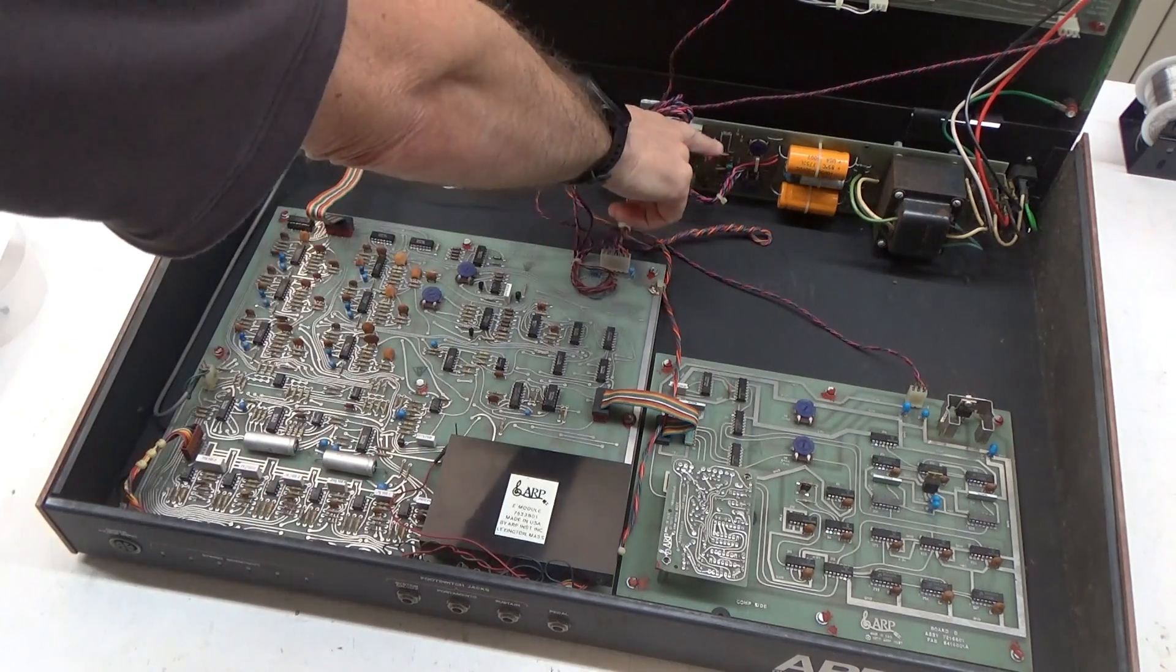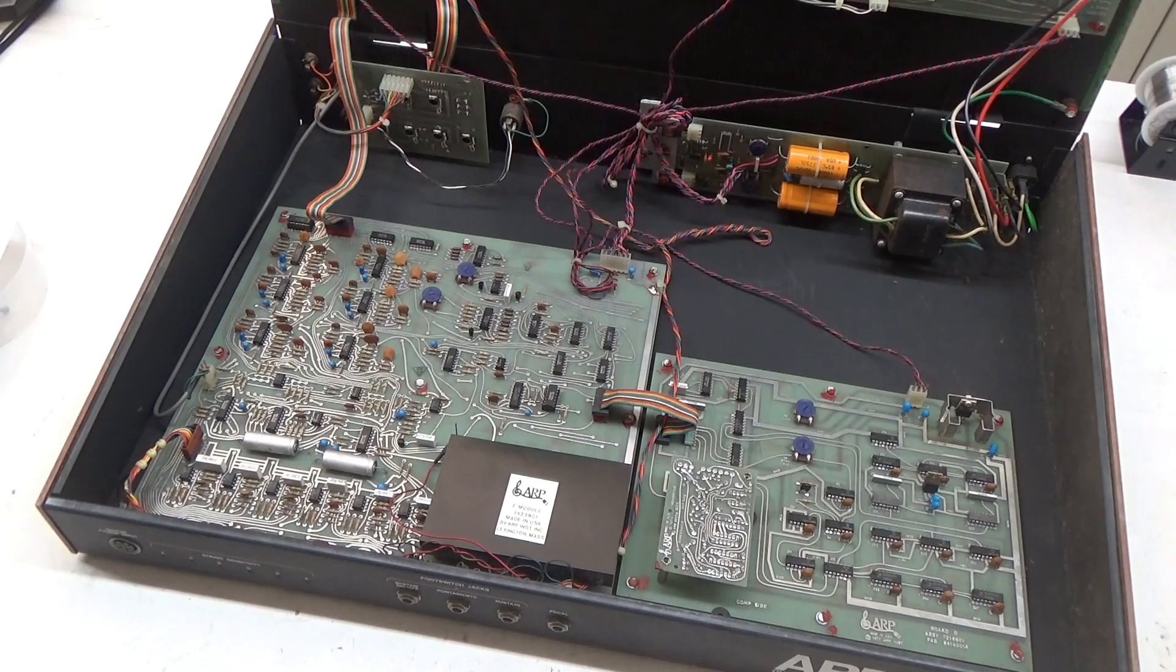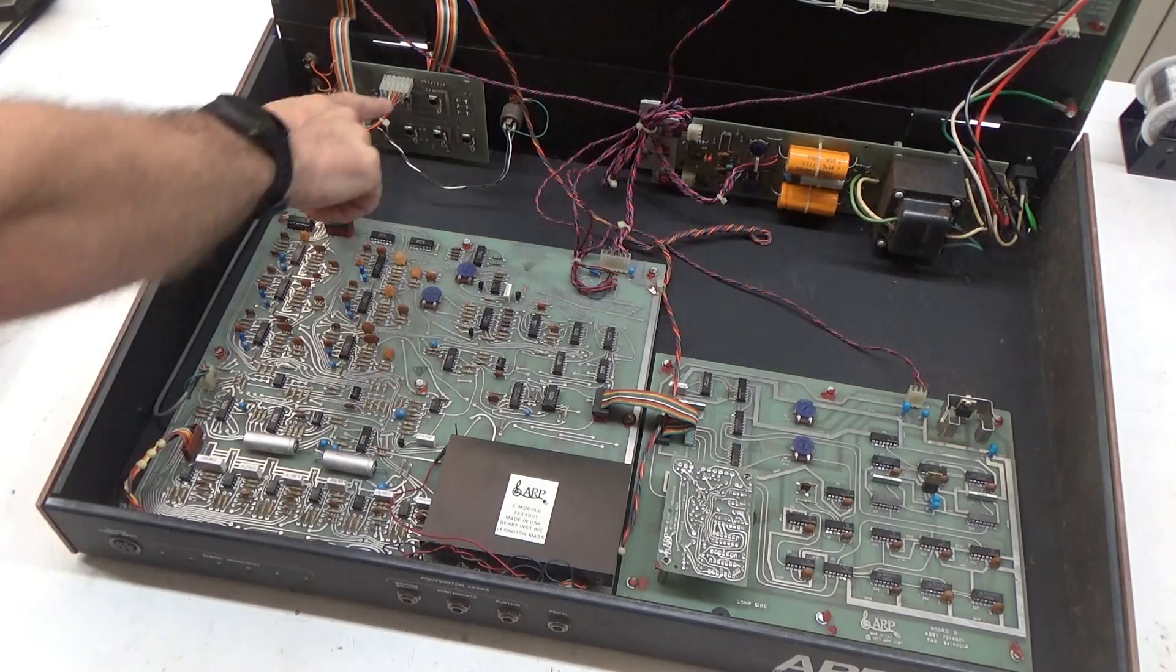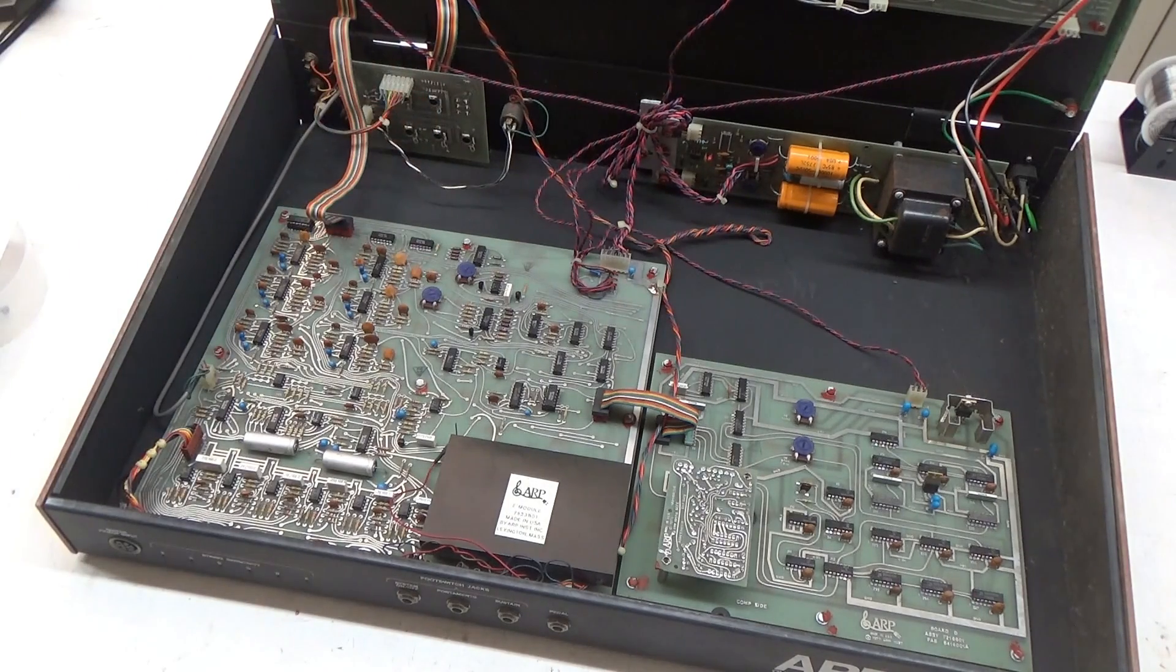Anyway, back here we've got the power supply. If my memory serves me correctly, I think this is the same power supply that's found in the ARP Omni 1 and Omni 2. And this little board back here just has some jacks on it.